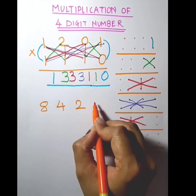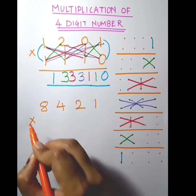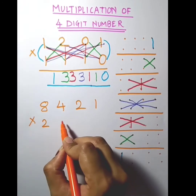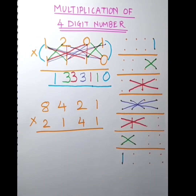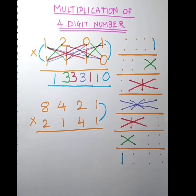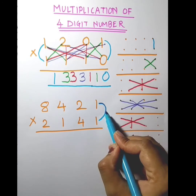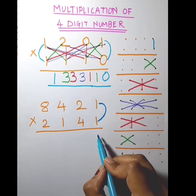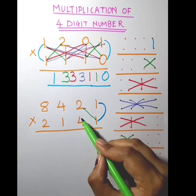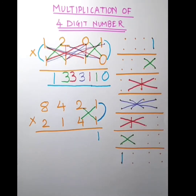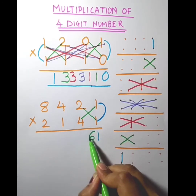What was the first step? Multiply these two numbers: 1 into 1 is 1. Then the next step: 2 into 1 and 4 into 1. So 2 into 1 is 2, 4 into 1 is 4, so 4 plus 2 is 6.